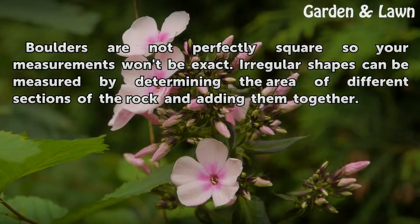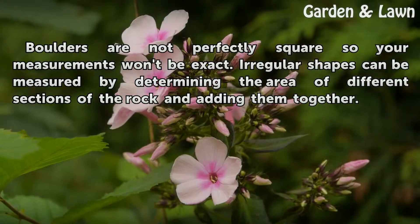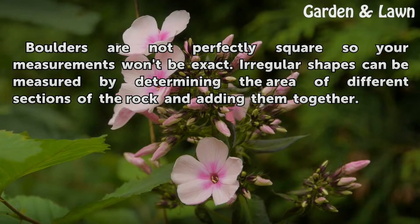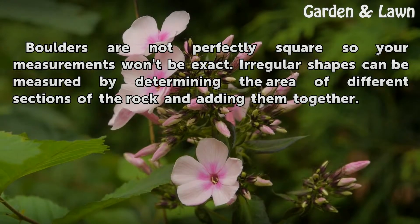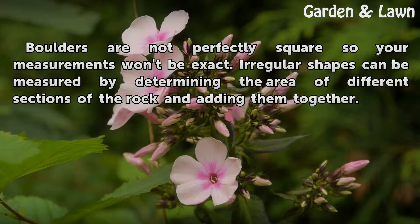Boulders are not perfectly square, so your measurements won't be exact. Irregular shapes can be measured by determining the volume of different sections of the rock and adding them together.